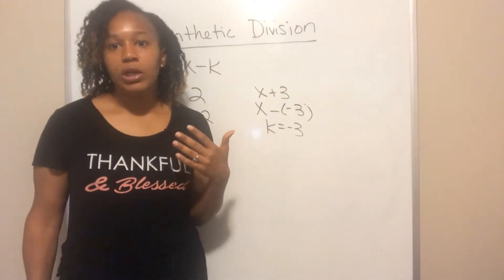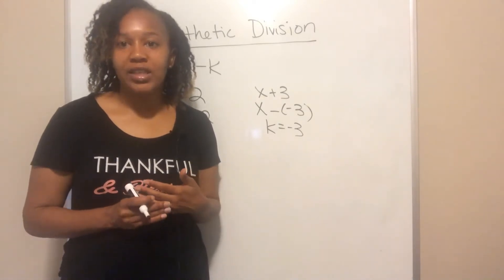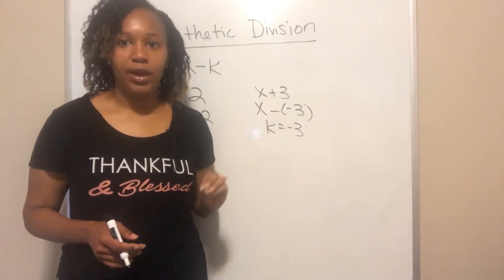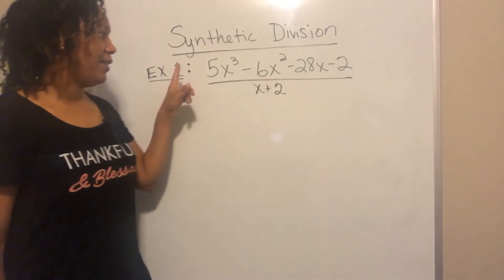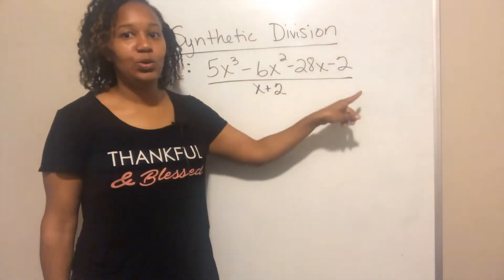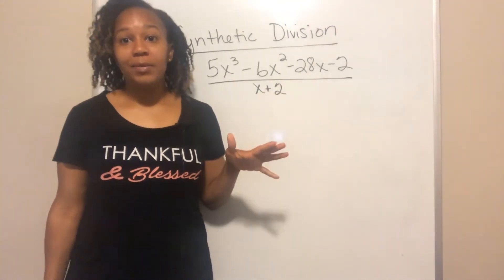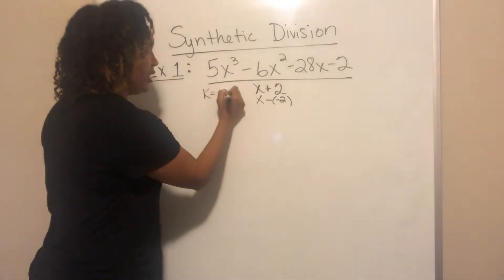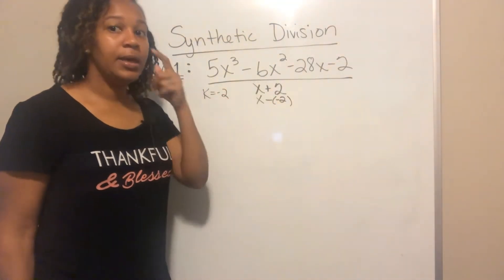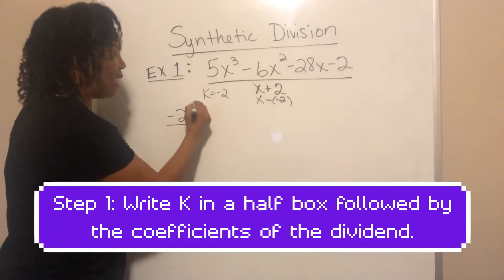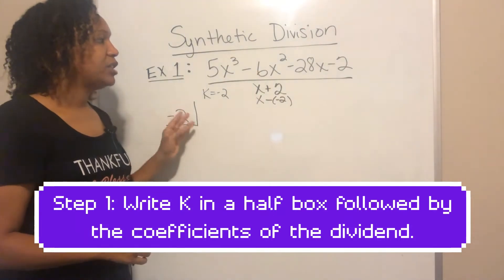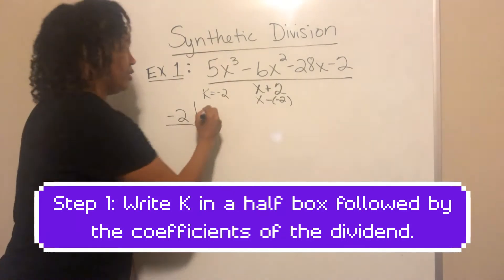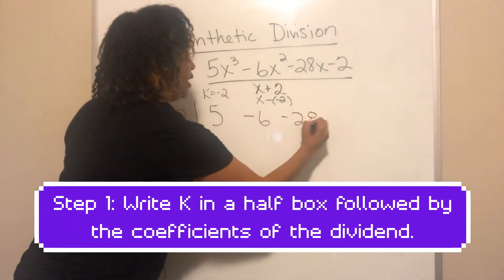Now I want to go through an example step by step. This sounds like a lot but when you actually do it, it's really easy. In Example 1 we want to take 5x³ minus 6x² minus 28x minus 2 and divide it by x plus 2. We're dividing by something of the form x minus k, so rewriting: x minus negative 2, meaning k is negative 2. Step one: write k in a half-box, then list the coefficients — 5, negative 6, negative 28, and negative 2.